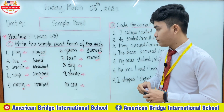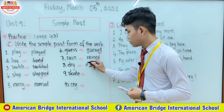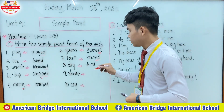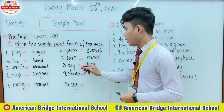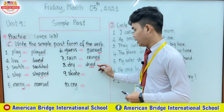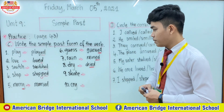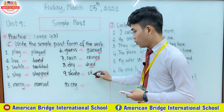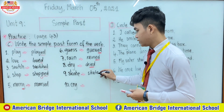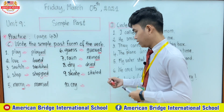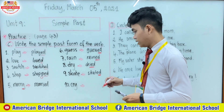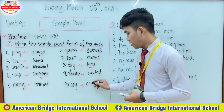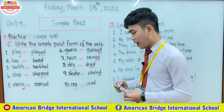Number eight: the verb 'dry'. Dry changed to 'dried' in the simple past — you change y to -ied. Number nine: the verb 'skate'. The verb 'skate' already ends in e, so you don't have to add more e. You just add only -d: skated. Number ten: the verb 'cry'. You have to change y to -ied: cried.